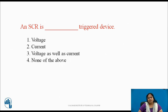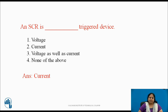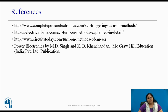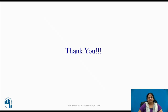After studying these different turn-ON methods, consider the following question: An SCR is a dash-triggered device — choose the correct option. The answer is current. Triggering ON and OFF state of SCR is controlled by its gate current, anode current, latching and holding current. Thus, in this session we saw different turn-ON methods of SCR. These are the references you can refer. Thank you.